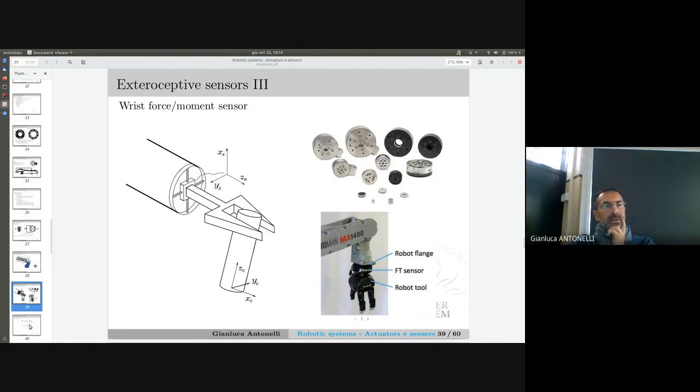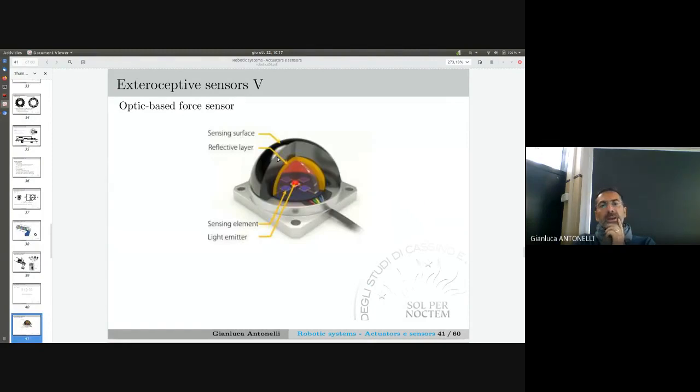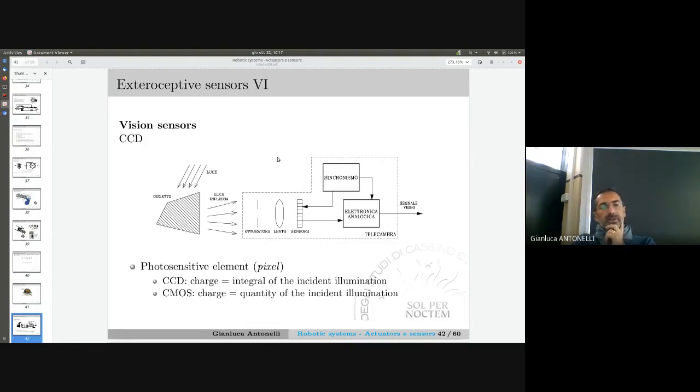I need to identify this matrix. I need to calibrate - whenever I buy a sensor, the first thing I do is calibration. This rotation matrix and this displacement is something I need to measure before using. Other very nice sensors are optic-based, and this is a scheme of such an instrument. They are very sensitive.